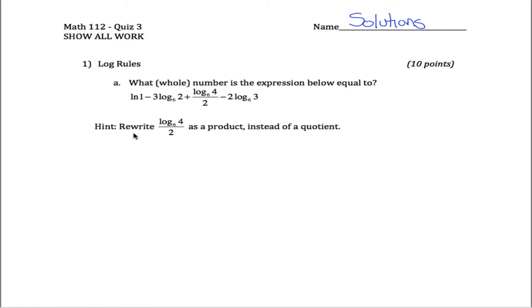There's a hint — it says rewrite this third term as a product instead of a quotient. It's currently a quotient, something divided by something. Rewrite it as a product, in other words, something times something.